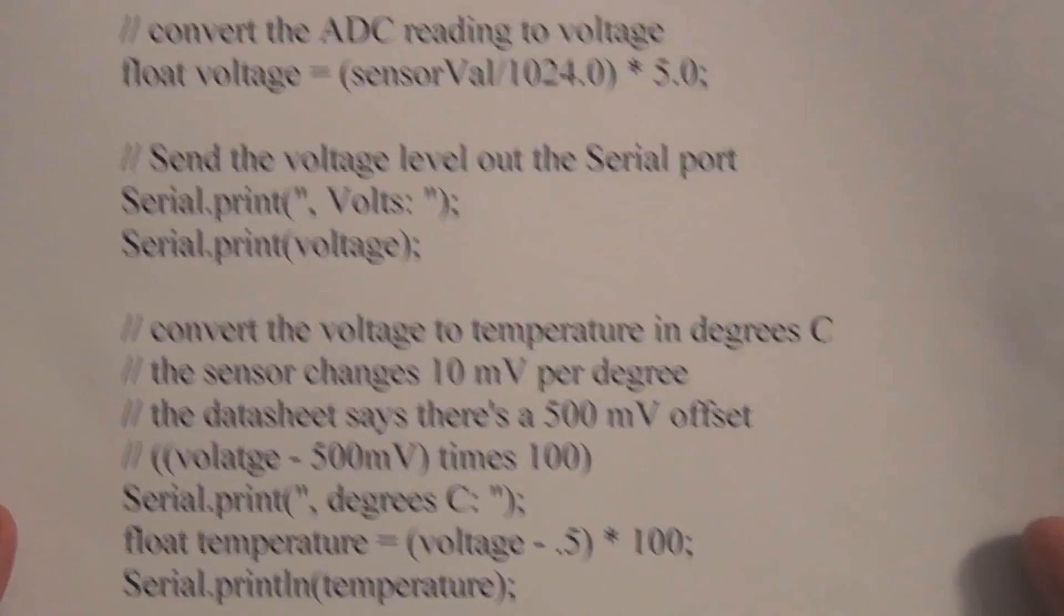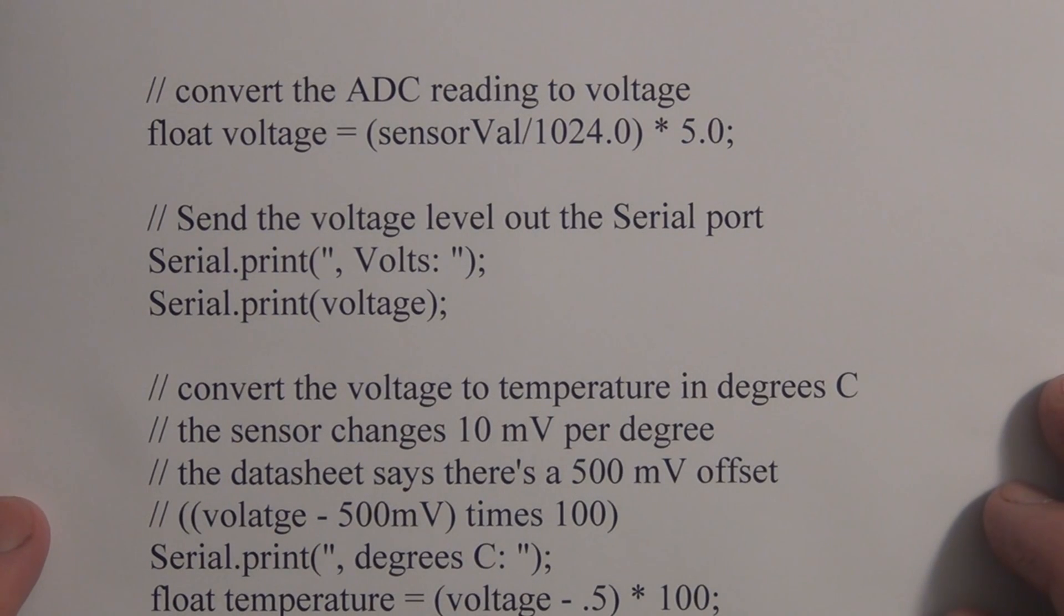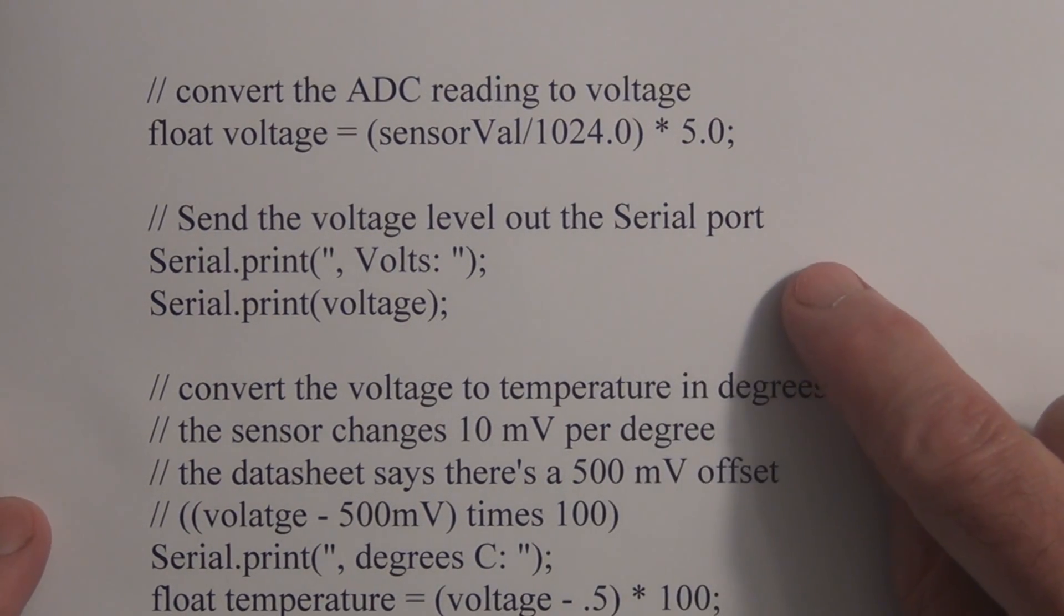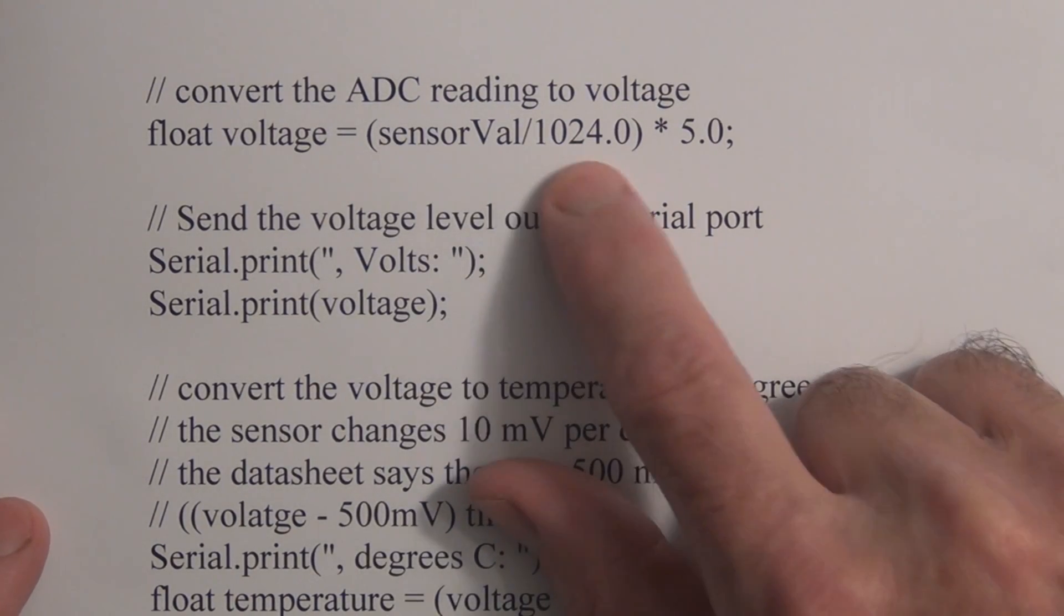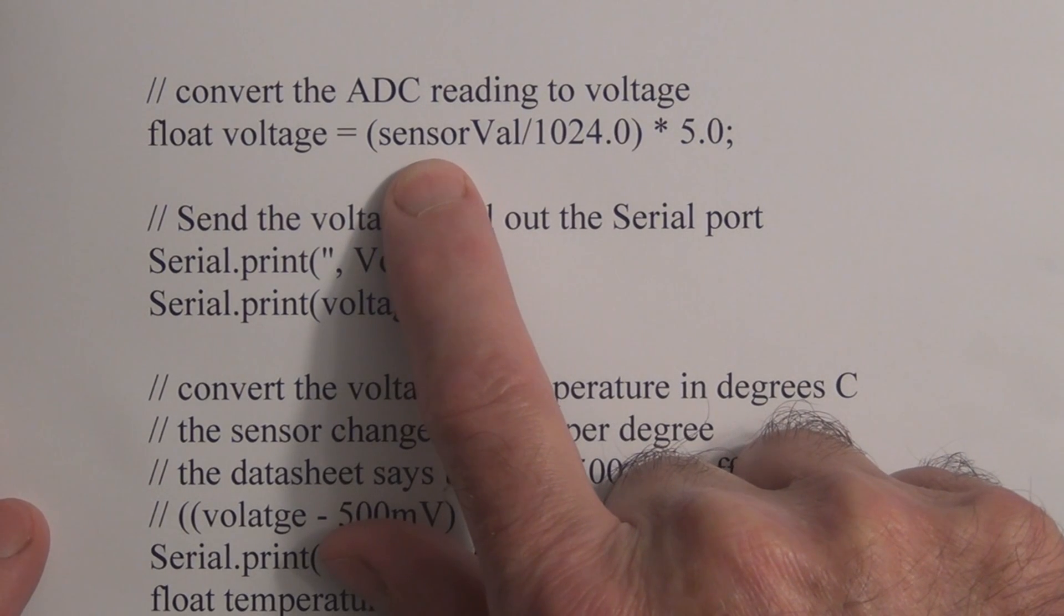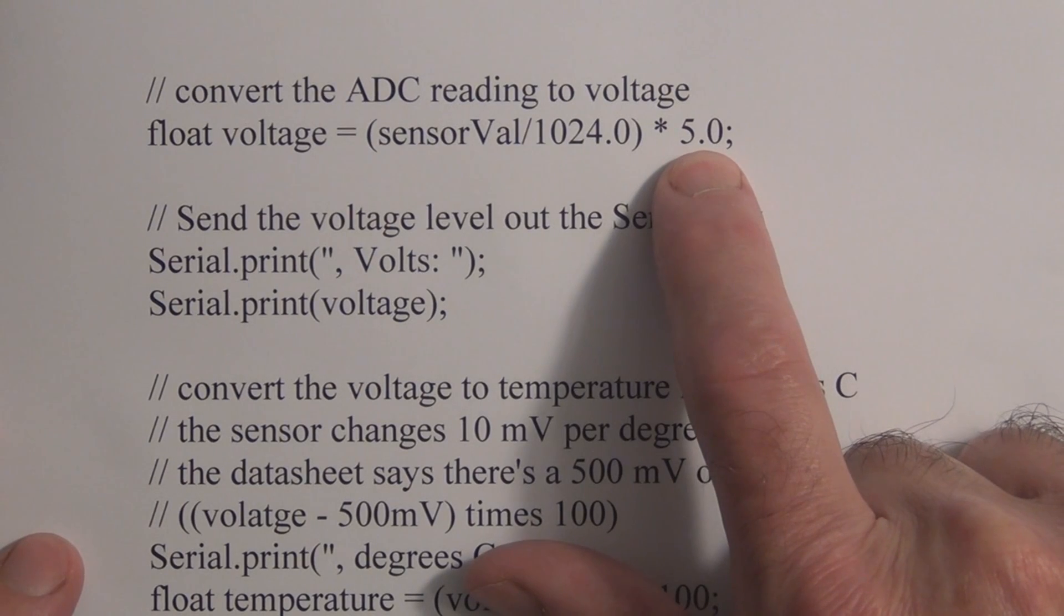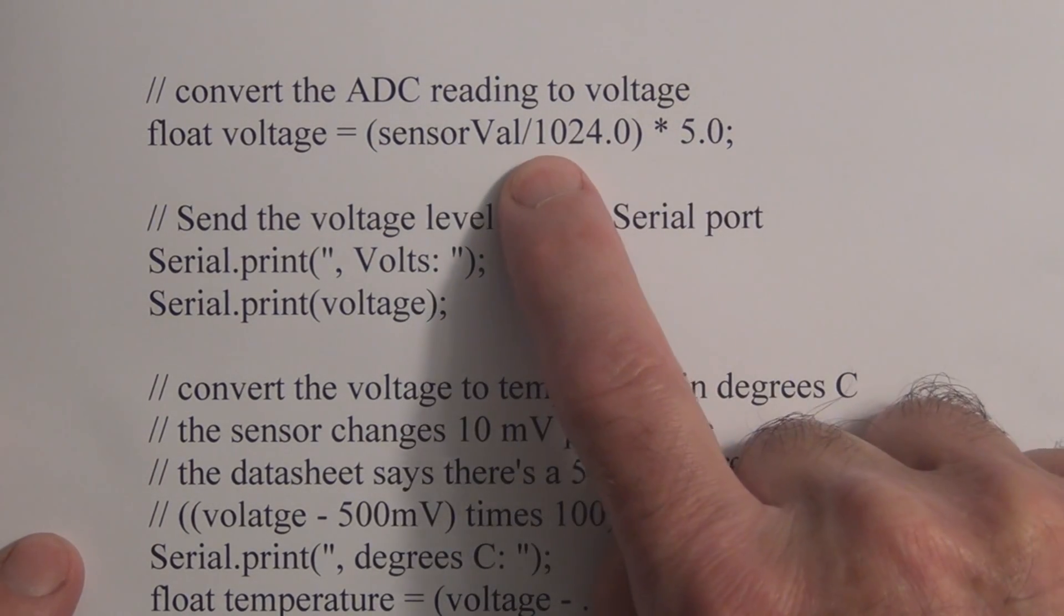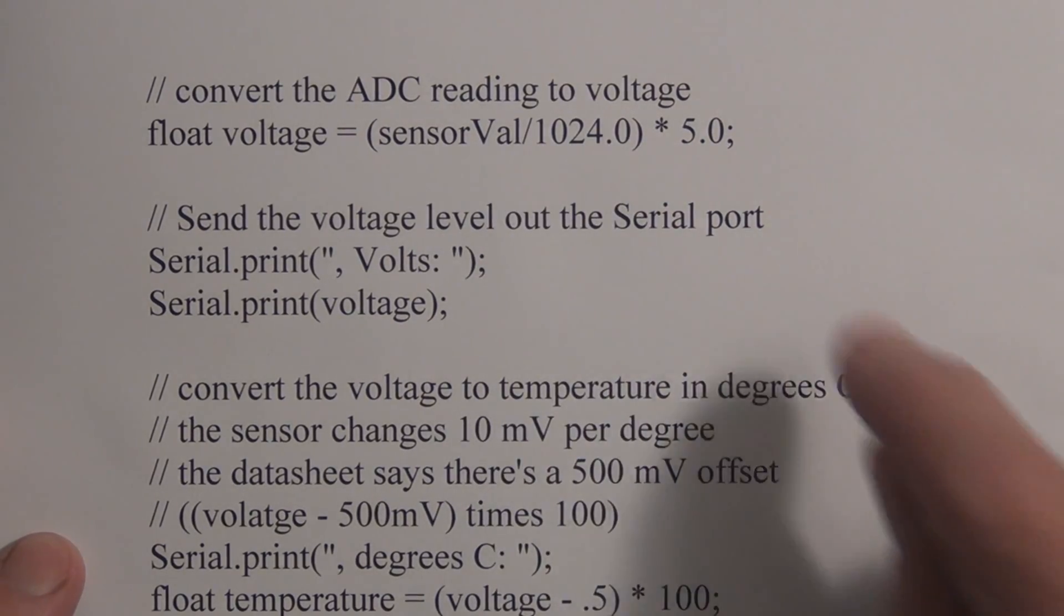That output voltage gets fed into the analog input on the Arduino and that gets read by the analog to digital converter that's on the ATmega chip. The resolution of that ADC is 1024, so you take that voltage from the temperature sensor, divide it by 1024, and then multiply it by 5 to get 1024 separate voltage increments.